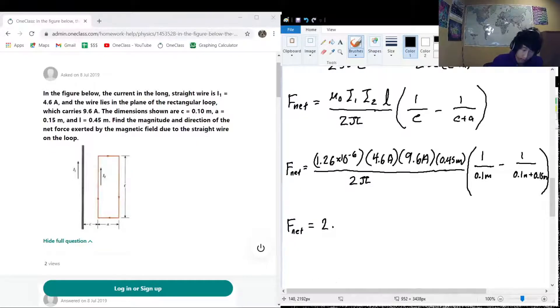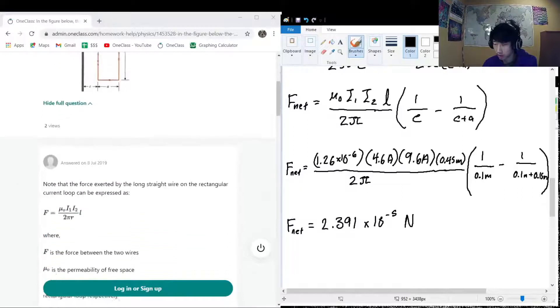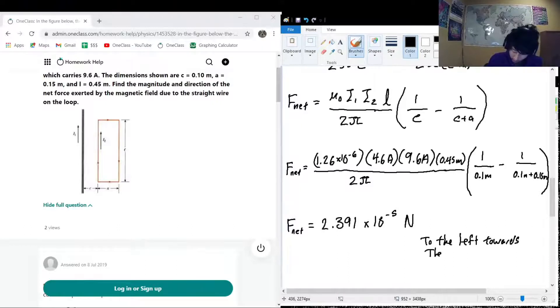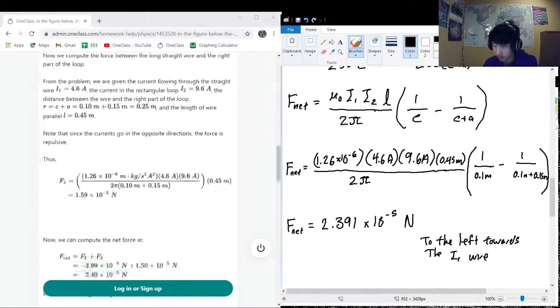My calculation results for this is the net force as experienced from these two is 2.391 times 10 to the negative 5 newtons, because force is always in newtons, or since we're using SI units, it should always be in newtons. So this will be the net force as experienced by the loop due to the straight wire. We also want to give a direction to this. We know that we had positive forces go as attracting to each other and negative forces as repelling, so this will be to the left towards the i1 wire.